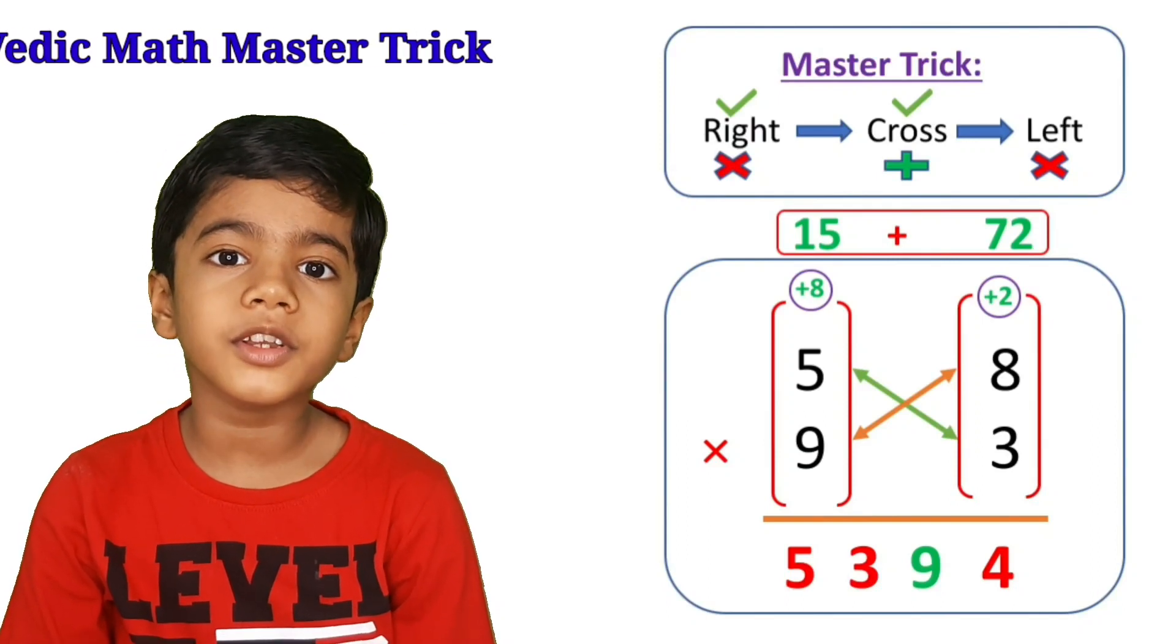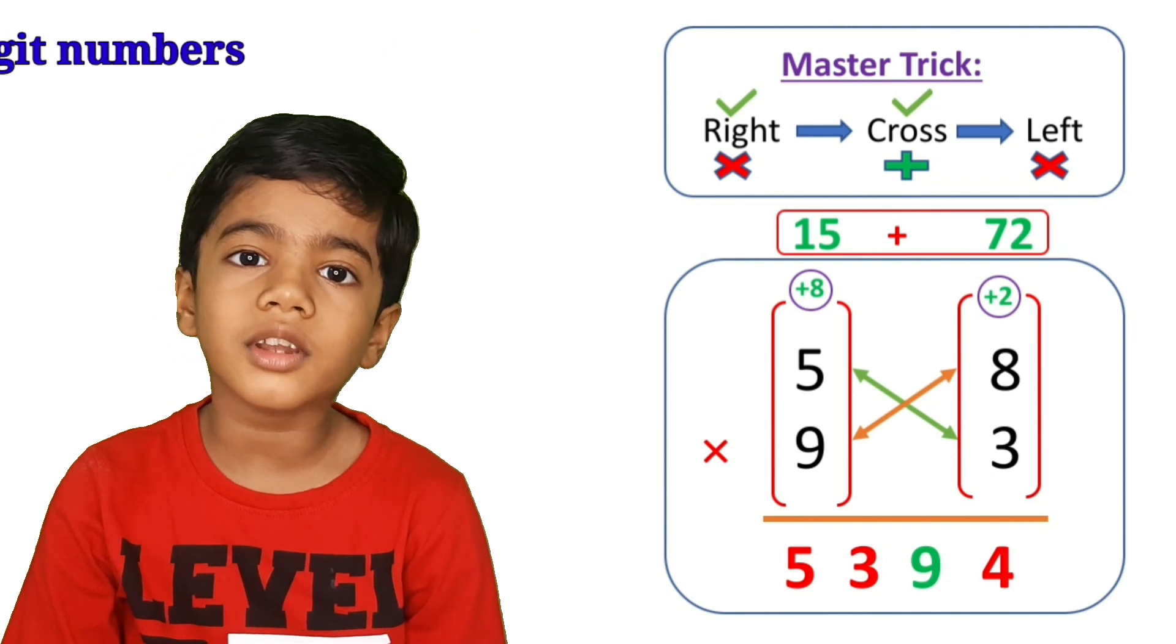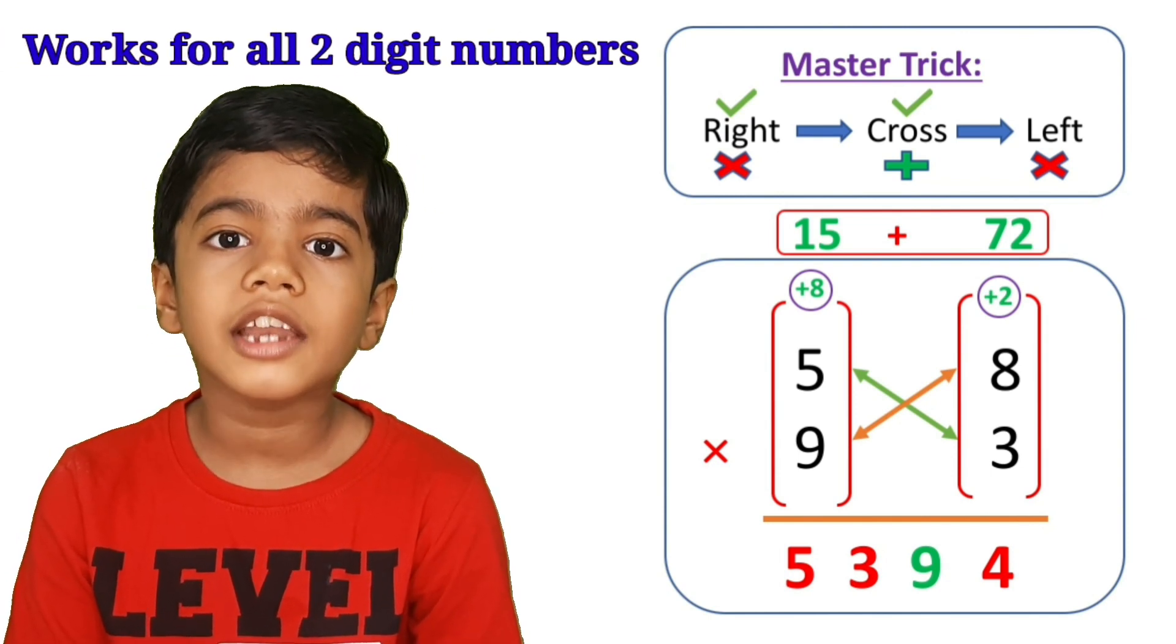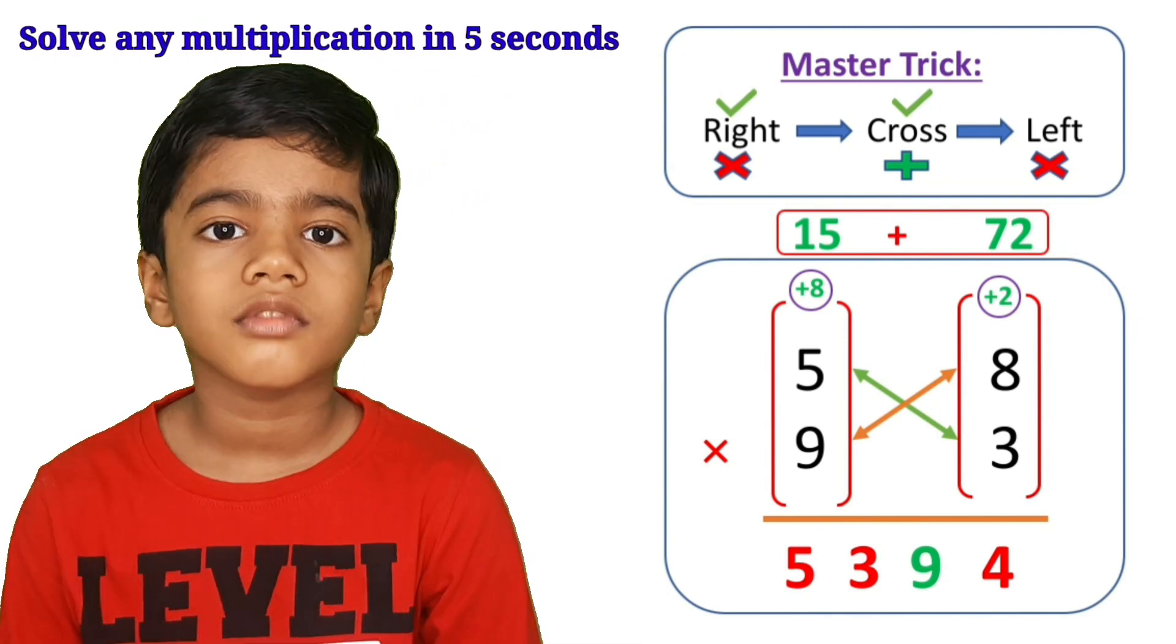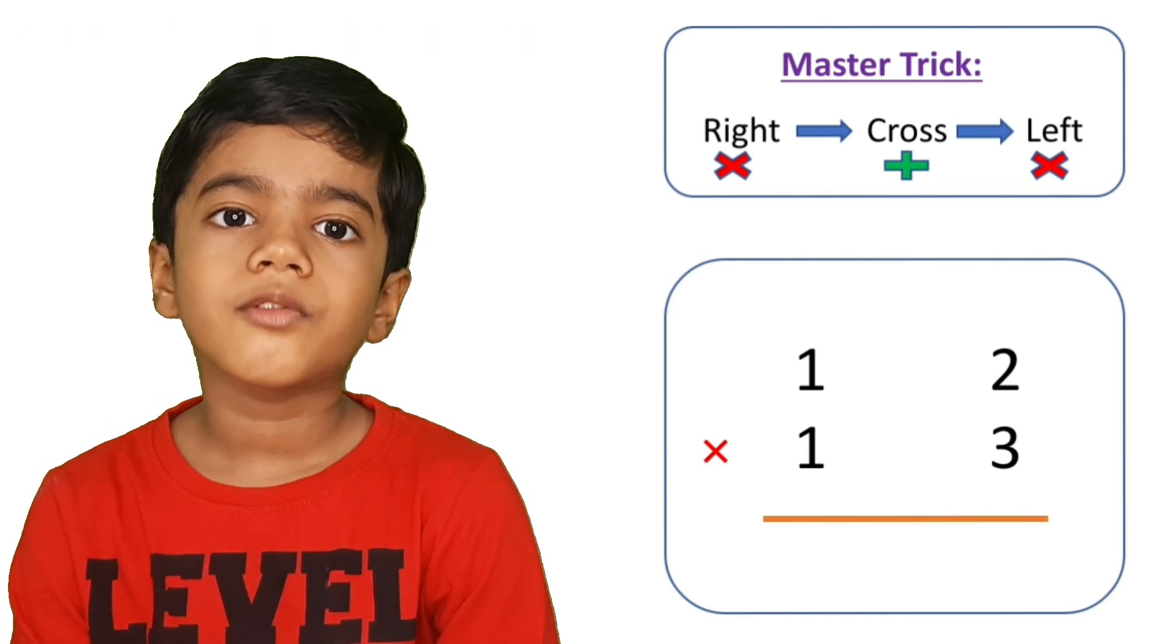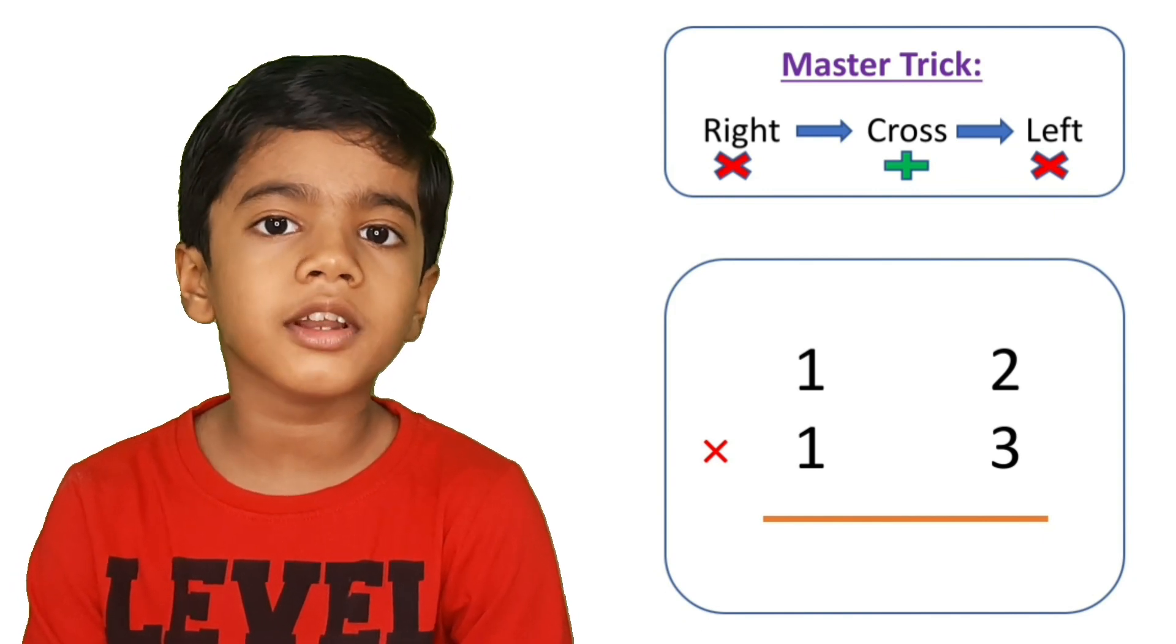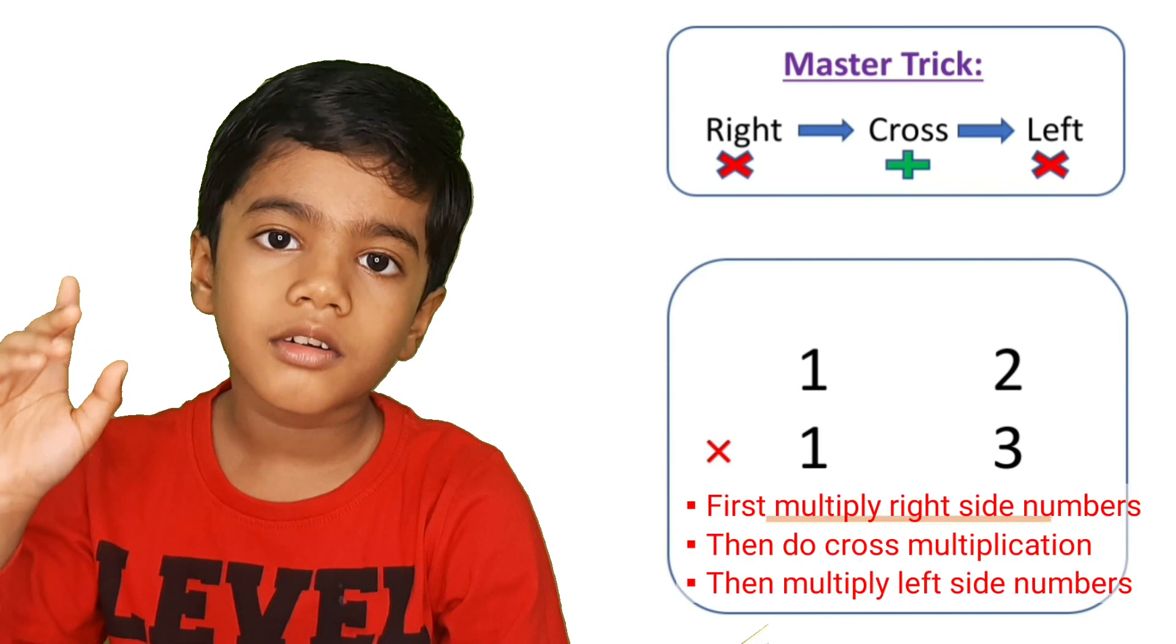Hello friends, in this video I'm going to tell you the master trick of two-digit number multiplication. You can remember this trick and solve any multiplication in five seconds. Let's take an example: 12 into 13. First we will do easy multiplication, then move to complex. Here is the master trick: remember right, cross, left.